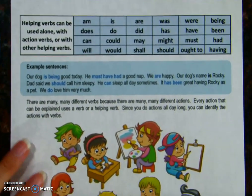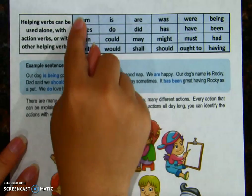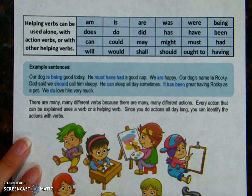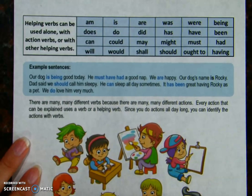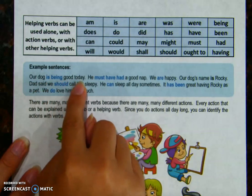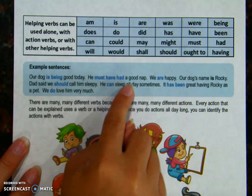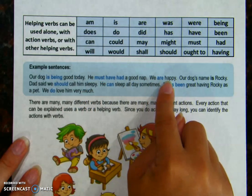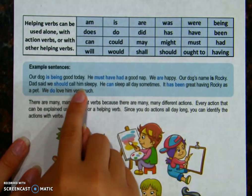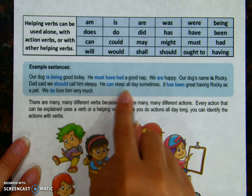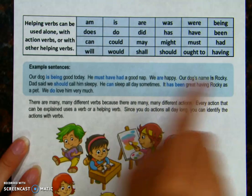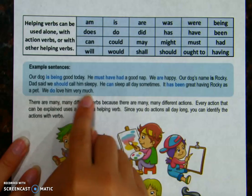Here are some more helping verbs: am, is, does, do. These are a lot like our sight words. Let's look at an example: Our dog is being good today. He must have had a good nap. We are happy. Our dog's name is Rocky. Dad said we should call him Sleepy. He can sleep all day sometimes. It has been great having Rocky as a pet. We do love him very much.